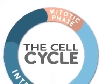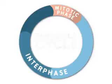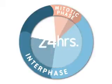Mitosis is only one part of what is called the cell cycle. For many eukaryotic cells, a cell is duplicated every 24 hours.